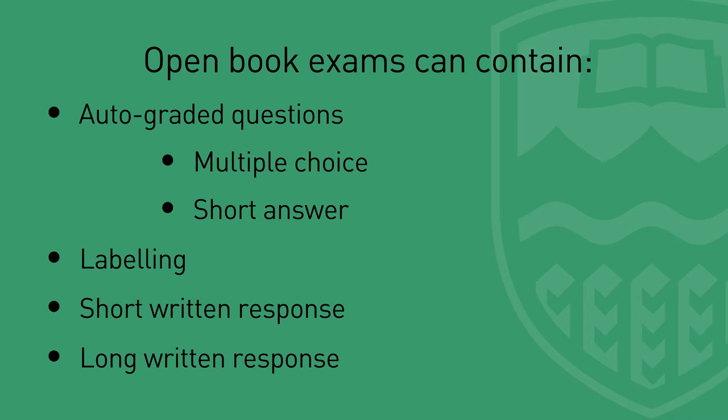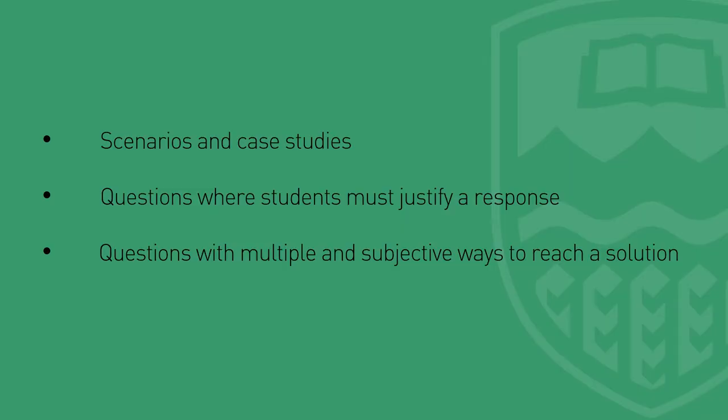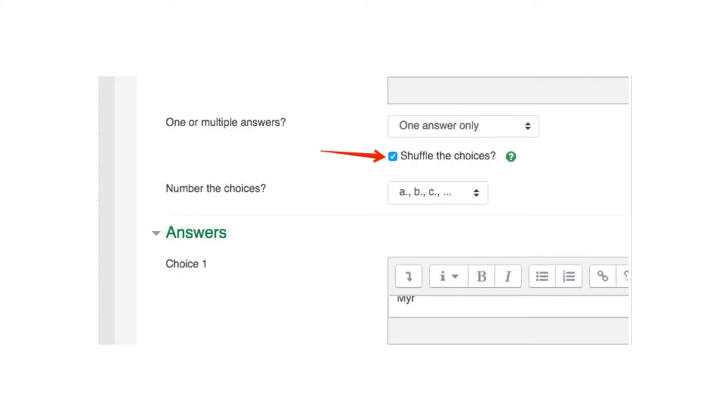Open book exams can contain some auto-graded questions such as multiple choice, short answer, or labeling, but most often use short and long written response questions. Essentially, if your student is able to find the answer with a simple Google search, it is not advisable to include that in your open book exam. Questions should require higher-order thinking and should be written in such a way that students need to apply and synthesize the course content they have learned over the semester.